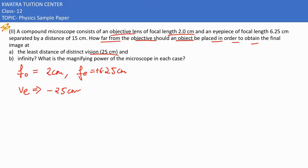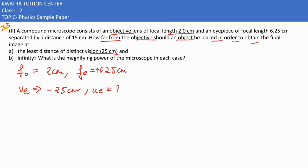Now we need to find uₑ for the eyepiece. We'll use the lens formula: 1/fₑ = 1/vₑ - 1/uₑ.